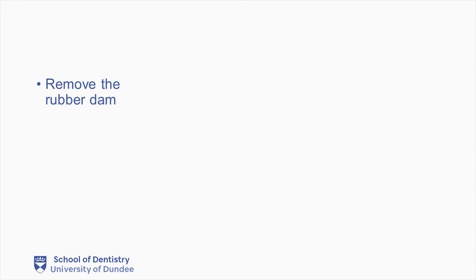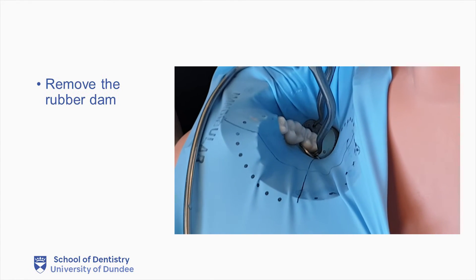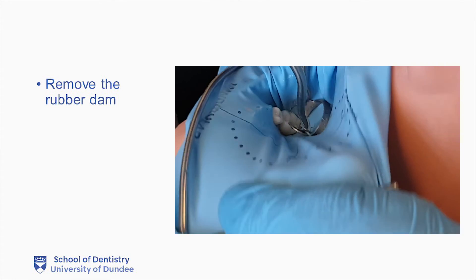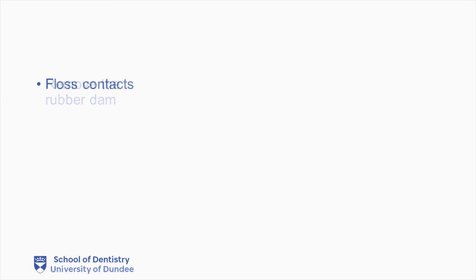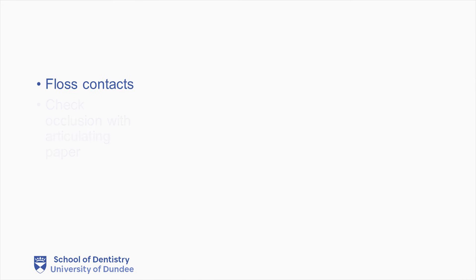It is now time to remove the rubber dam. Following this, we should floss our contact points to ensure that no bond or composite have become lodged there. And then we must check the occlusion with articulating paper to ensure that there are no high spots.